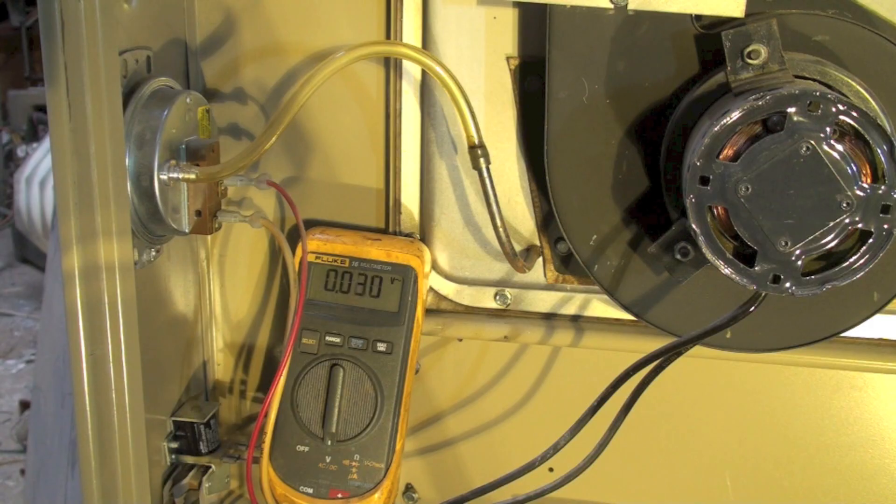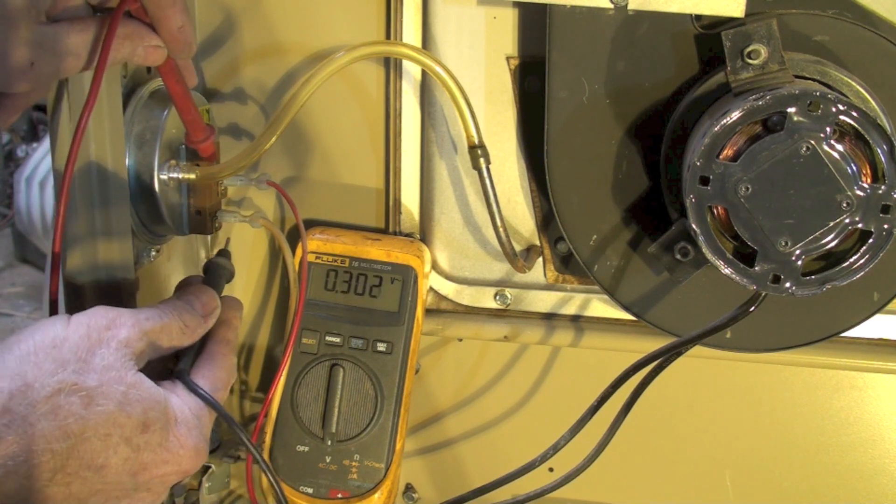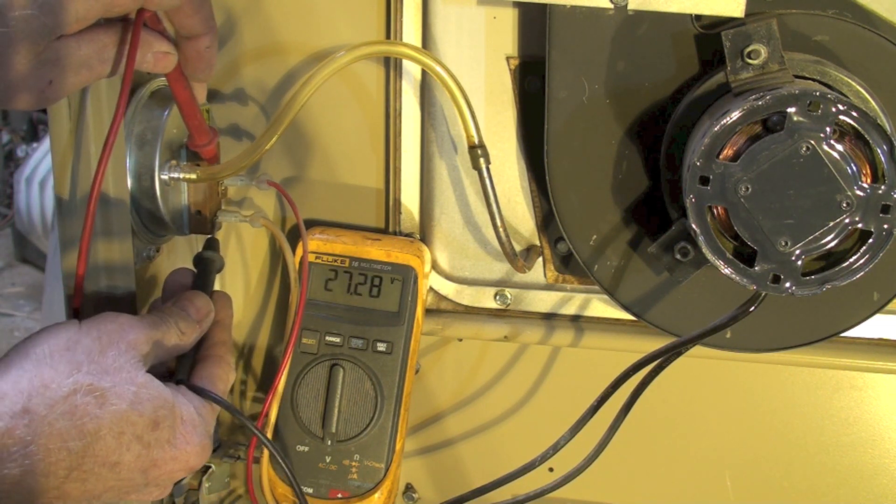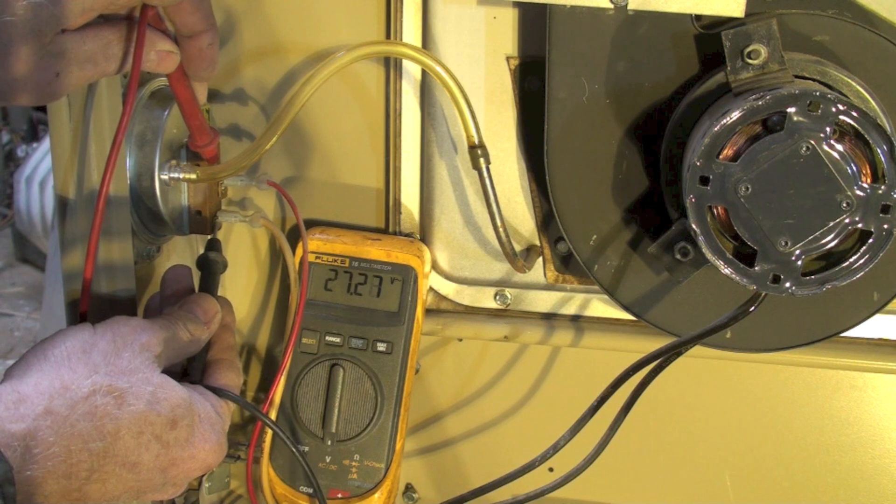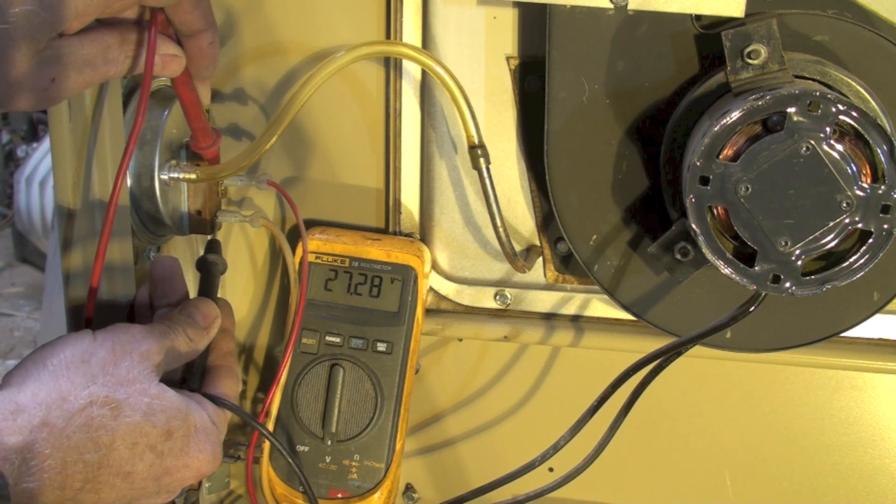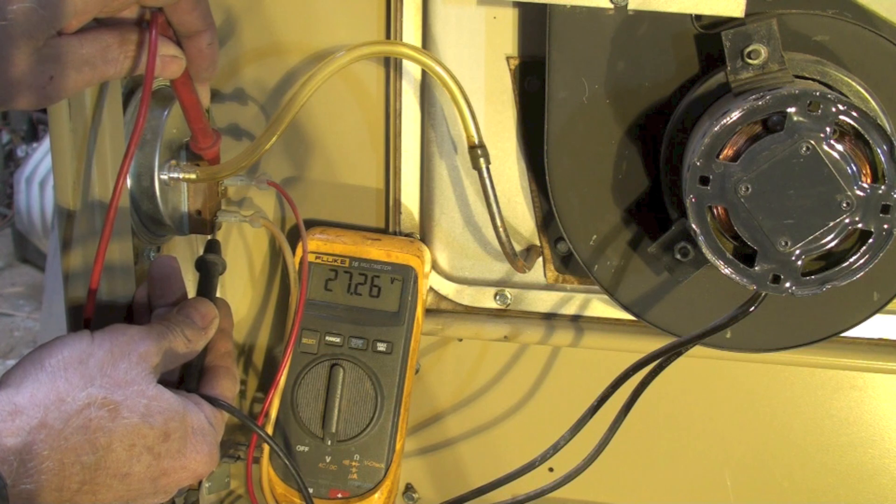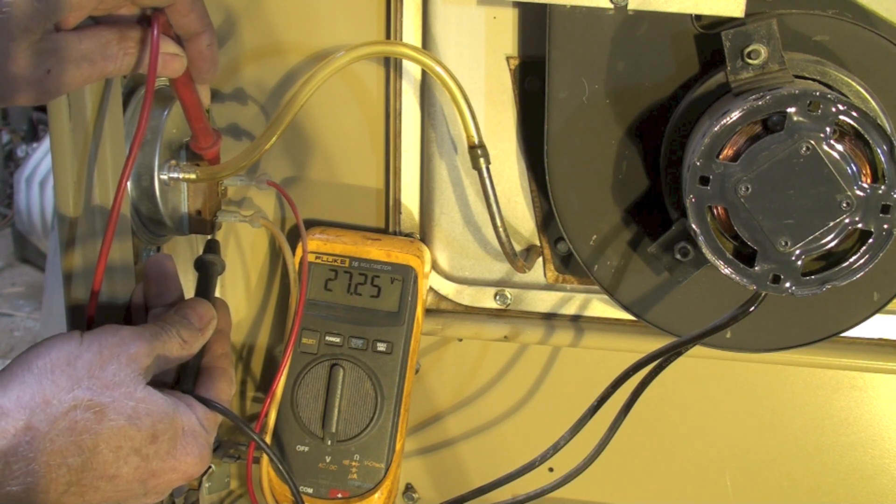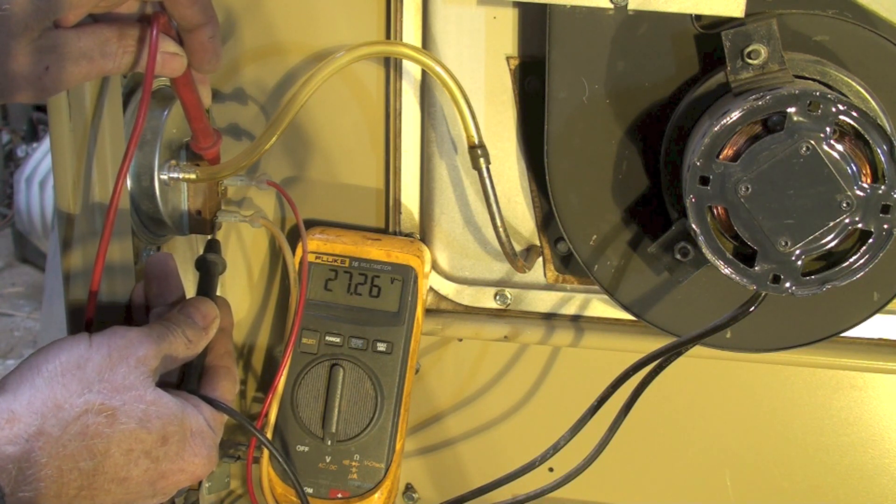Let's find out. Okay, I'm gonna go across here. Now you can see I'm showing a voltage. That means the pressure switch hasn't closed, because if it had closed I would read zero across the pressure switch. So what's wrong?